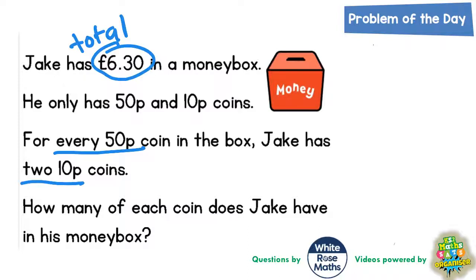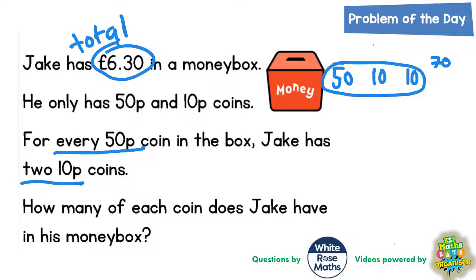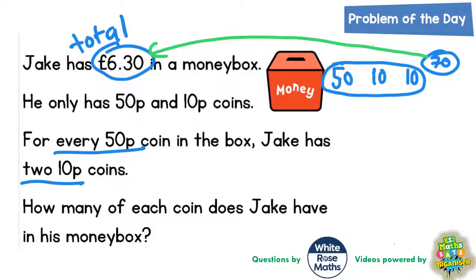What we could do is say: every time he has a 50p, he's got 2 ten-pence coins. That adds up to 70p. So every group of coins — 1 fifty and 2 tens — adds up to 70p. We can see how many of these 70ps go into £6.30. Don't forget that £6.30 is actually 630 pence, so we're seeing how many 70s go into 630.